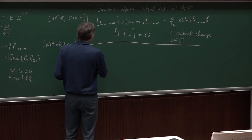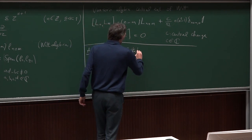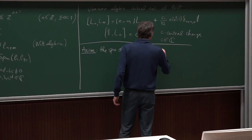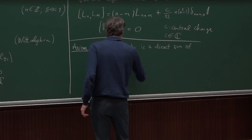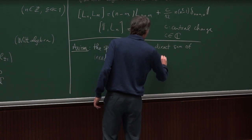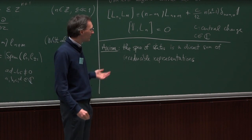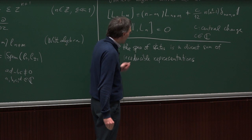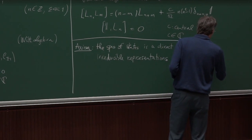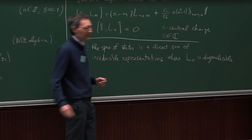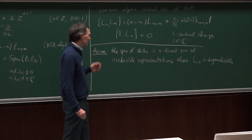The first axiom: the space of states — the spectrum — is a direct sum of irreducible representations of the Virasoro algebra, where the generator L_0 is diagonalizable. By saying irreducible, that's already a restriction which is not true in all conformal field theories, but it will be true in these introductory lectures.